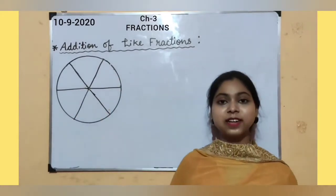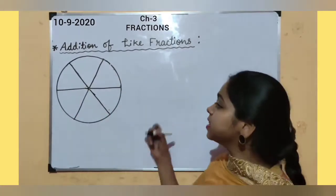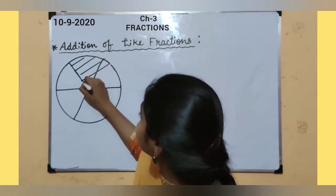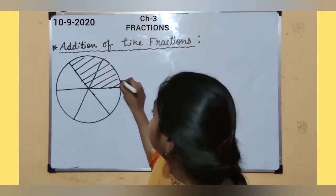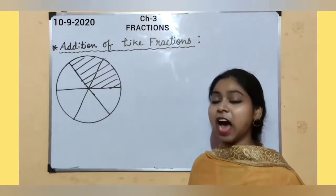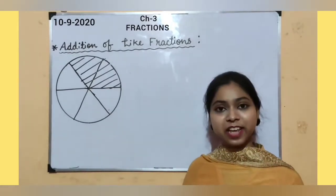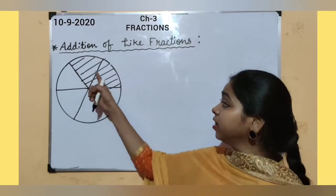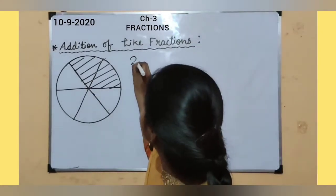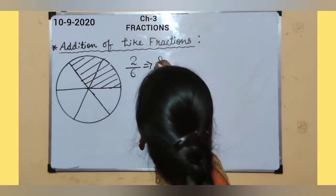Out of these 6 parts, she has given this many parts to her first child, that is Shreya. So can you tell me how many parts of this pizza have been given to Shreya? 1, 2. So 2 parts out of 6 have been given to Shreya.